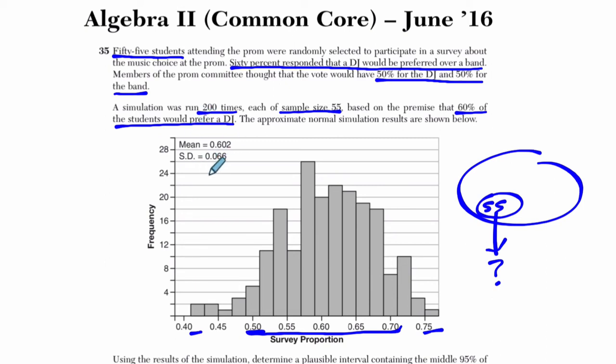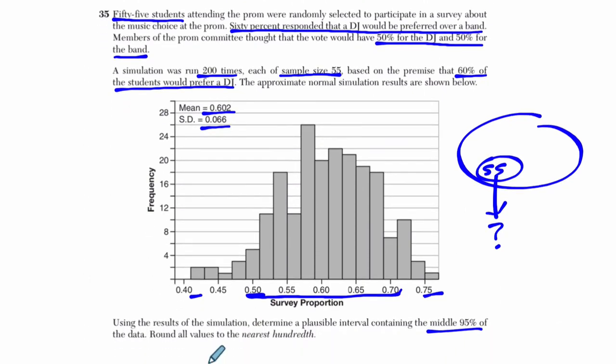Okay, anyway. So the standard deviation, the mean is about 60%, .602. The standard deviation is about 6.6 percentage points in the right direction. And they want to know, is it determined a plausible interval containing the middle 95% of the data? Now, all we have to know here is that the middle 95% of the data is plus or minus 2 standard deviations of the mean, which is about here.